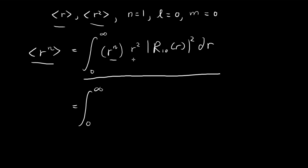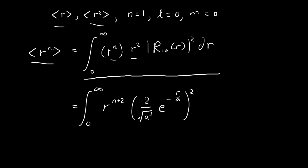We can combine these two terms to get r to the power of n+2. For R₁₀, we can look up the table that Griffiths provides in the book. R₁₀ is equal to 2 divided by a to the power of 3/2, times e to the power of negative r divided by a, times dr. Now all we have to do is evaluate this integral.